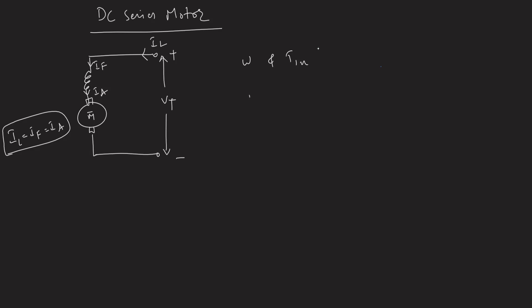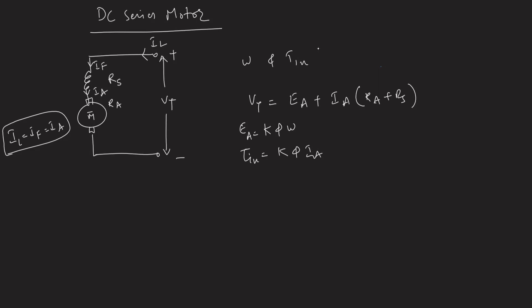The governing equation is: Vt = EA + IA(RA + RS), where RA is the armature resistance and RS is the series field resistance. The basic equations are EA = kΦω and τ_induced = kΦIa.